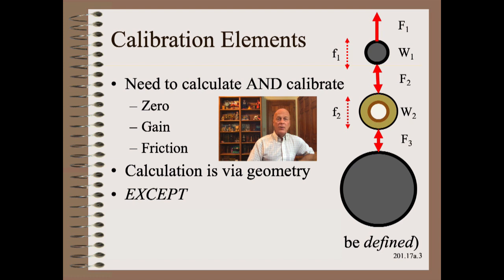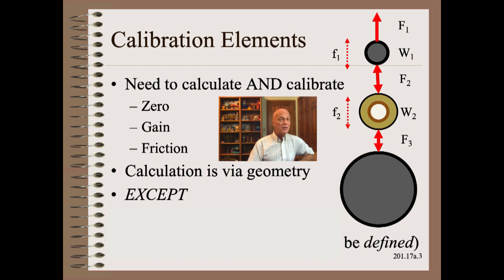Let us consider a system quite typical of a winder with a lay-on, pack, or rider roller. There are several forces to consider. There is F1, which is the force from a controllable cylinder. There is W1, which is the weight of the lay-on roll assembly. Also associated with the cylinder and the lay-on roller is little F1, which is the friction of the loading system, which we can find using the same methodology described in web 201.116a.